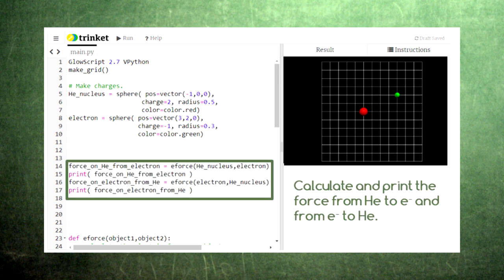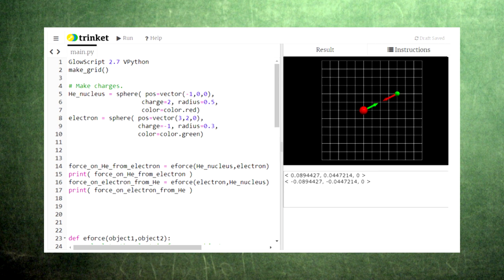Next, we need to calculate the electric force between the helium nucleus and the electron. This is where our e-force function comes in. Notice that we need to use this function twice: once for the force on the electron from the helium nucleus, and once for the force on the helium nucleus from the electron. Let's also ask VPython to print these force vectors for us. Now when we run the code, we see arrows representing the electric force that the helium nucleus exerts on the electron and that the electron exerts on the helium nucleus. As promised, these forces are equal in magnitude and opposite in direction, which we can see in the display window and in the printed numbers.